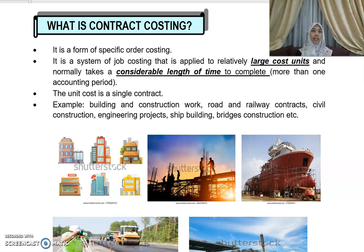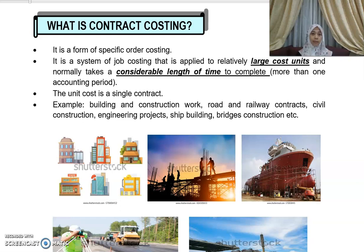As we mentioned earlier, contract costing is a form of specific order costing. It is a system of job costing that is applied to relatively large cost units, and normally takes a considerable length of time to complete — typically more than one accounting period. The cost unit is a single contract. Examples include building and construction work, road and railway contracts, civil construction, engineering projects, ship building, bridge construction, and so on.